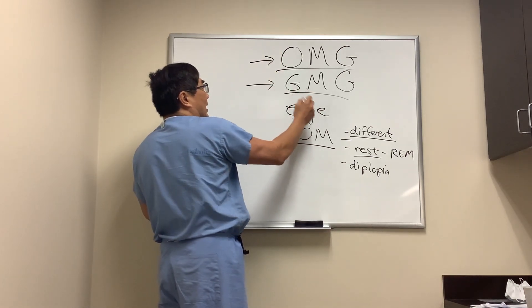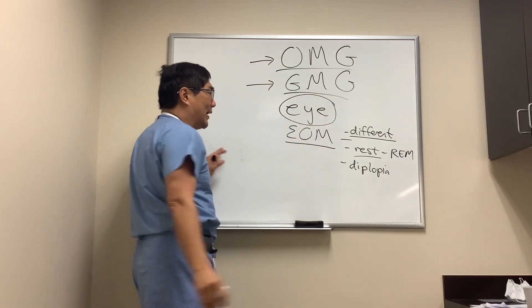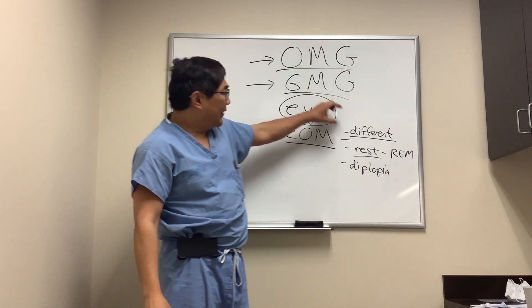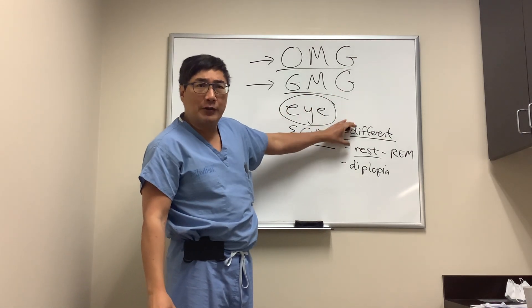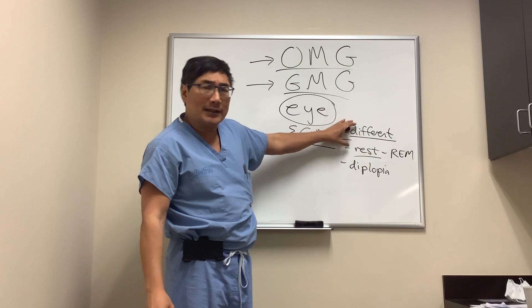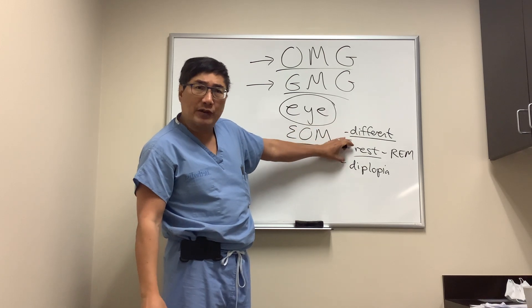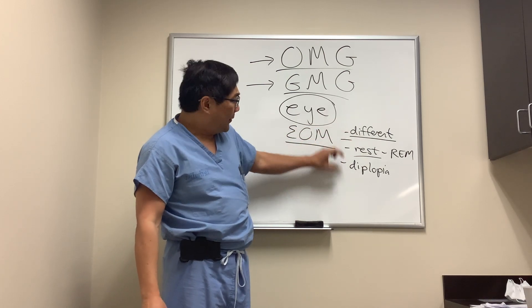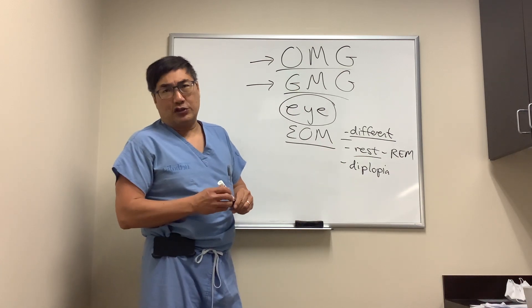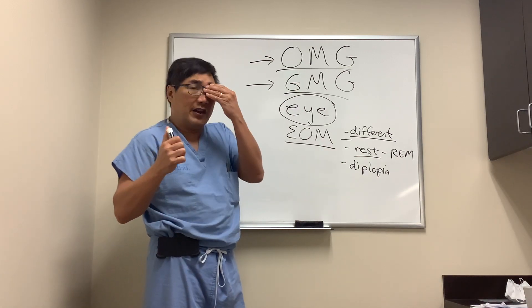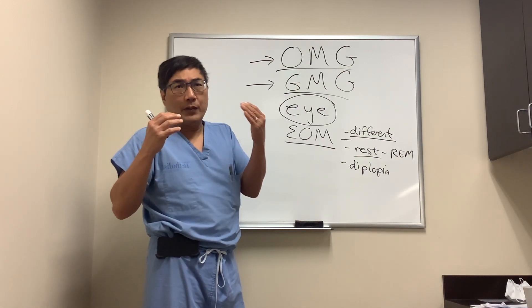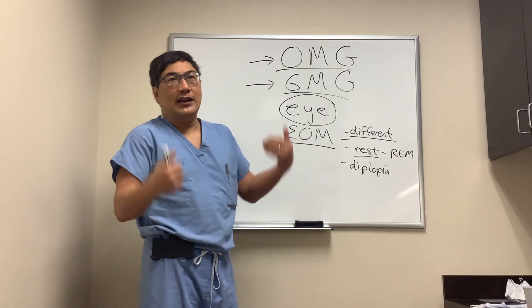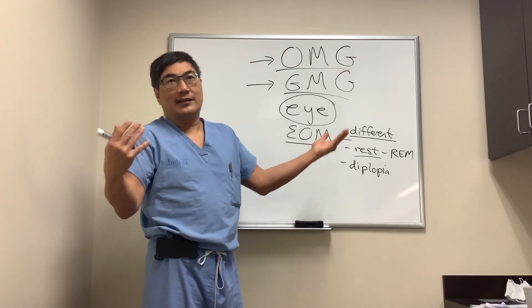The reason that ocular and generalized myasthenia have predominant eye findings is probably multifactorial: differences in receptors, fiber type, and metabolic demand; differential rest rates including rapid eye movements at night; and the asymmetry manifesting much more obviously in yoked eye muscles than in unyoked skeletal muscles.